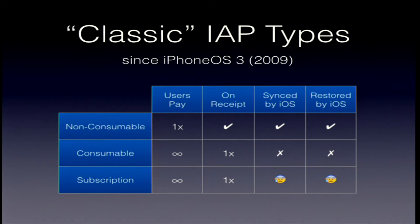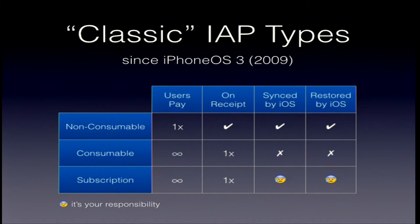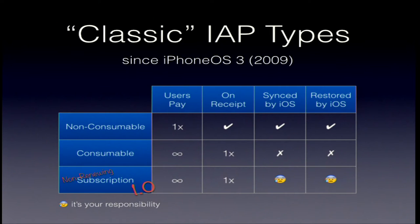Even in 2009, there was a type of subscription where users could buy as often as they liked. It would be on the receipt once. But syncing to other devices and restoring was your responsibility — it was implied by Apple's terms. If you used this kind of in-app purchase, you had to make sure it gets synced and has a way to restore it. If you didn't do it, they wouldn't approve it. These are called non-renewing subscriptions — that's the old way, which is why I call them 1.0.